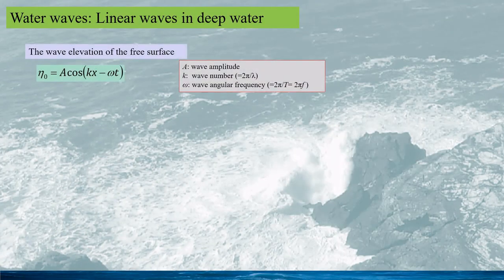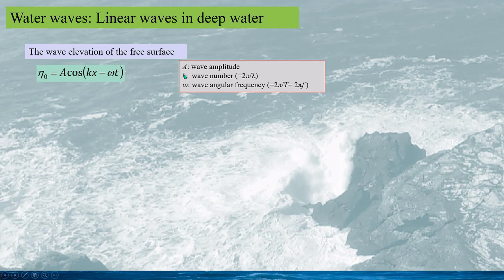Based on the linear wave theory in deep water, we can have the following results — you can see how this is obtained in my talk on linear wave theory. The wave elevation of the free surface can be expressed as eta-zero for a wave with an amplitude A and wave frequency omega. Here k is the wave number, which can be decided with the wave frequency.